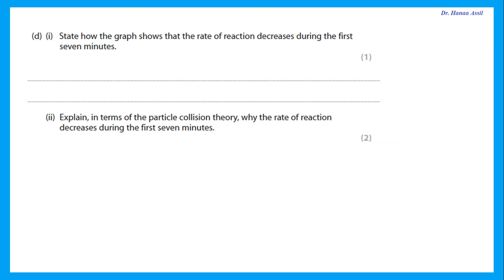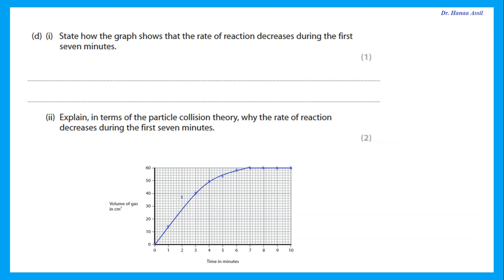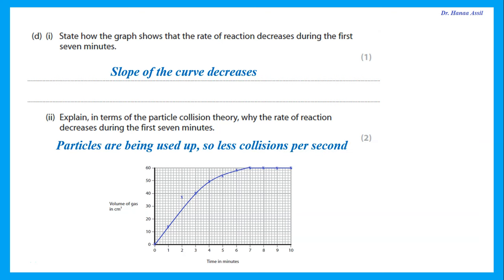State how the graph shows that the rate of reaction decreases: the slope of the curve decreases. Explain in terms of particle collision theory why the rate decreases during the first seven minutes: as the reaction proceeds, particles are being used up, so there are fewer collisions per second (less frequent collisions). Please mention time — fewer collisions per second or less frequent collisions.